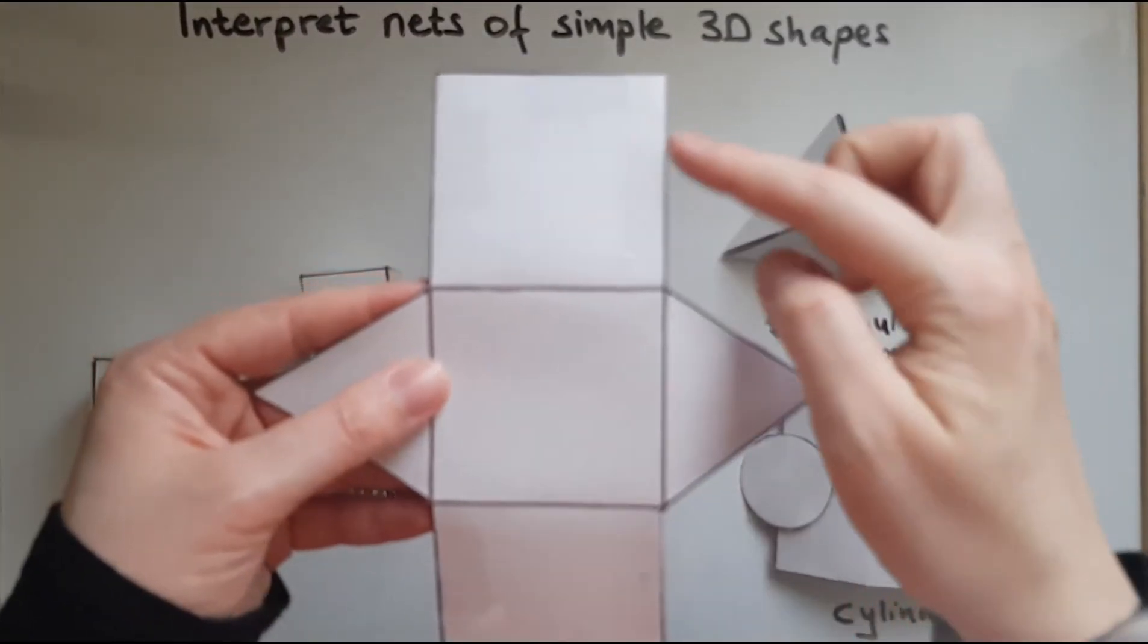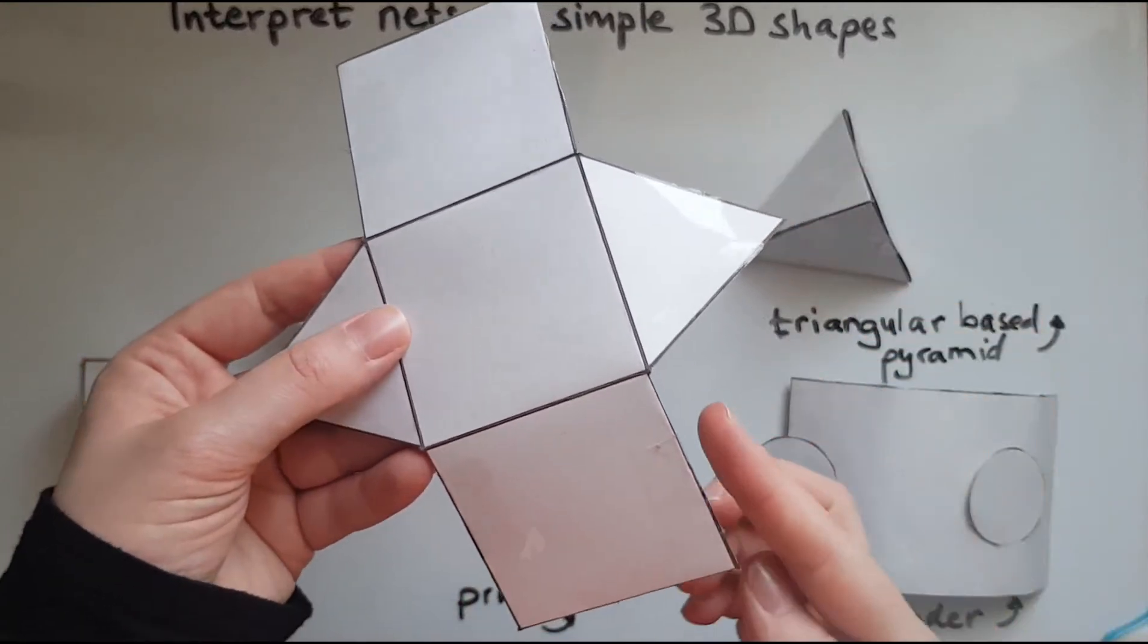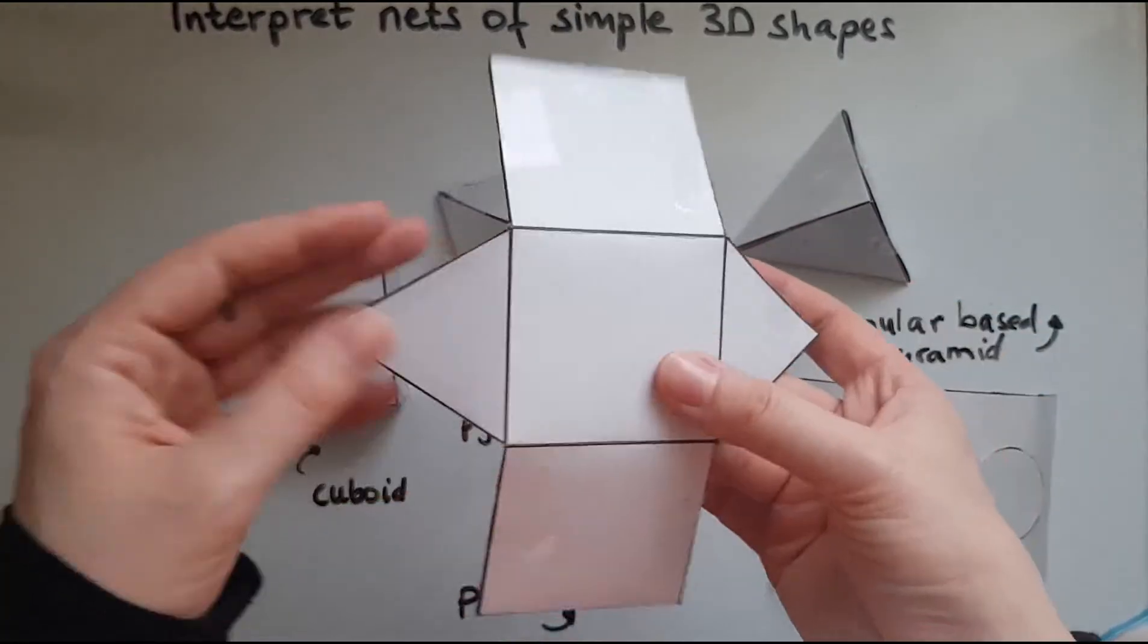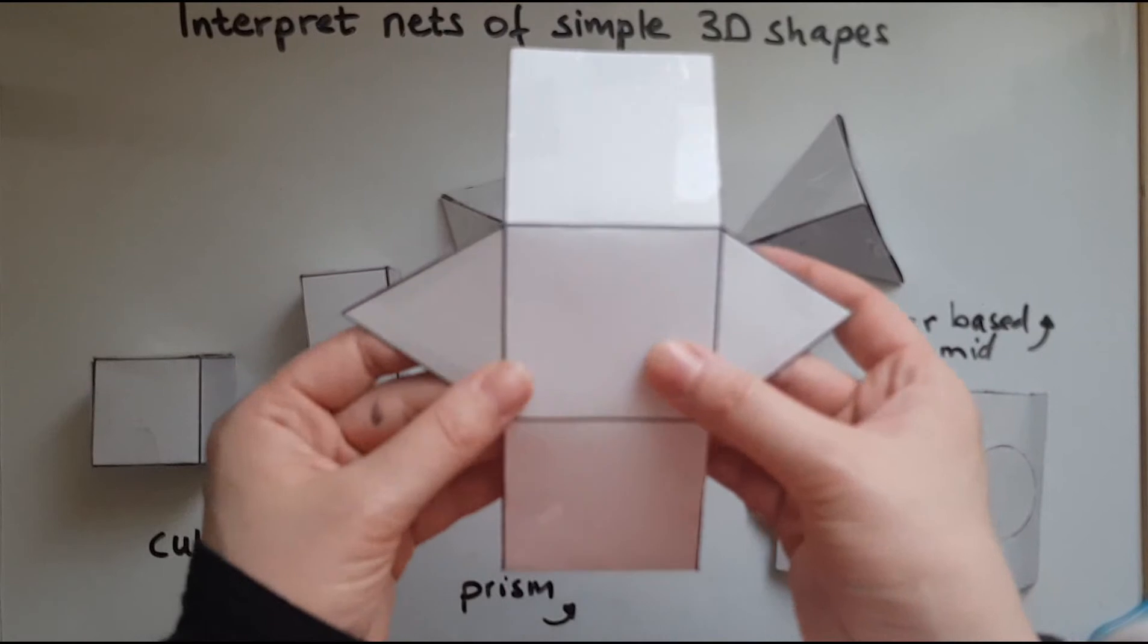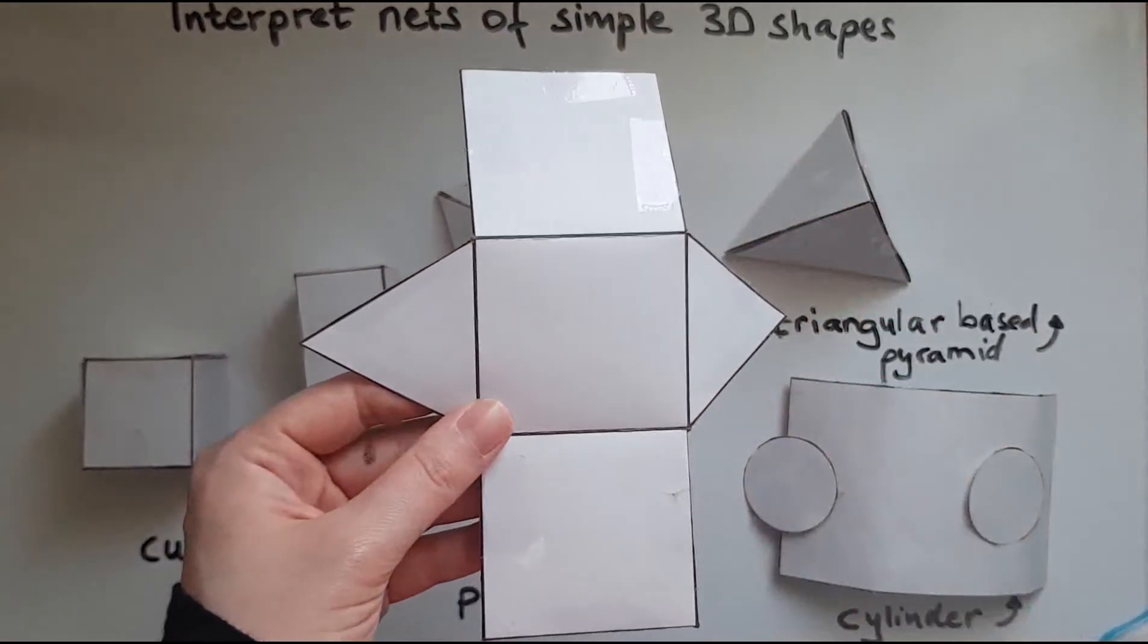We could have this triangle over here as well, or on this side. And the same thing with the other triangle. Just like the cube and the cuboid.